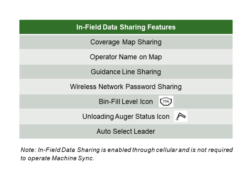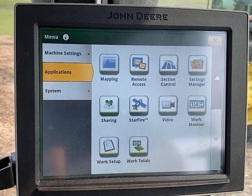In addition to these features, there are certain Machine Sync features that require the use of sharing to work, such as wireless network password sharing, bin fill level, and loading auger status icons, and the ability for the machines in a multi-leader or multi-follower operation to automatically select which network a follower is connected to.